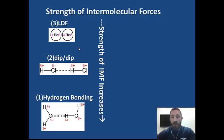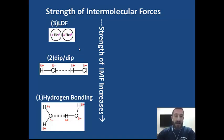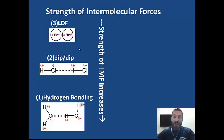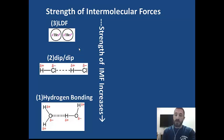When looking at the strength of intermolecular forces, we're going to go in reverse order. The strongest type of intermolecular force is hydrogen bonding. The second strongest is dipole-dipole, and the third strongest is London dispersion force. Let's go through each one and explain why it's a bit different, starting with the strongest — hydrogen bonding.